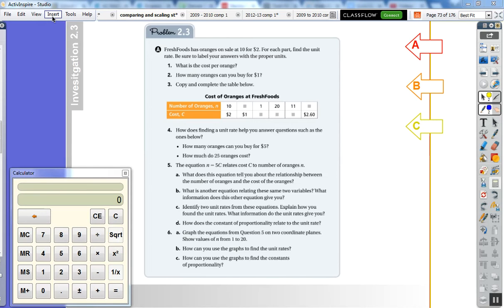Fresh Foods has oranges on sale at 10 oranges for $2. For each part, find the unit rate. Be sure to label your answers with the proper units.